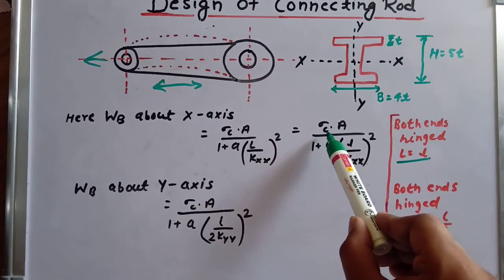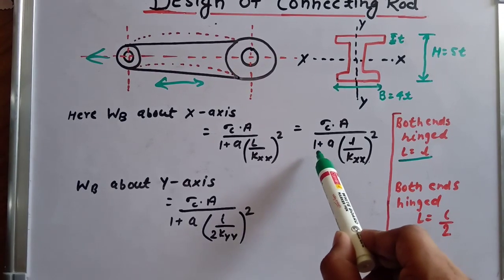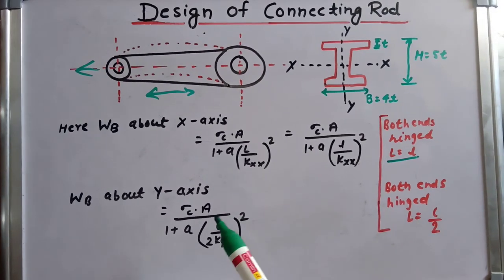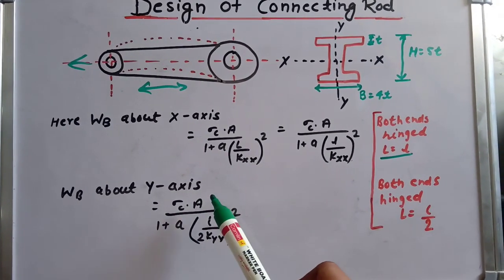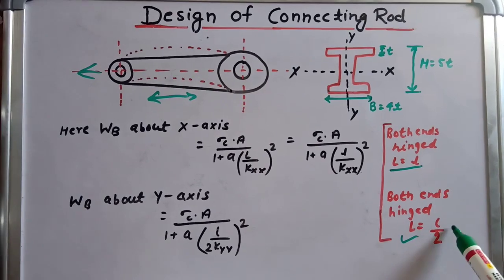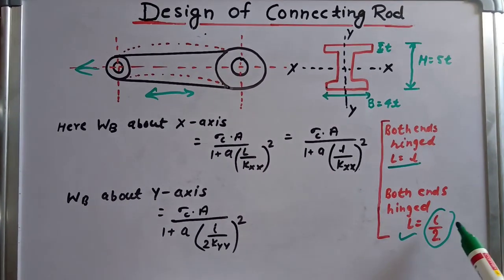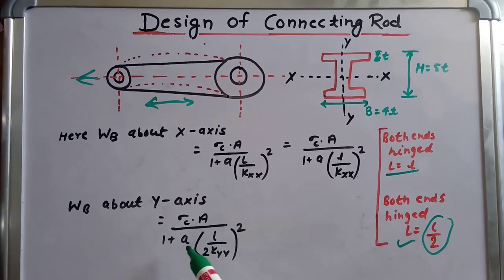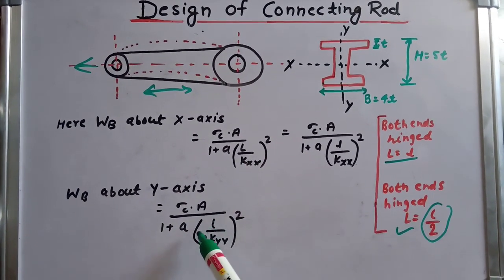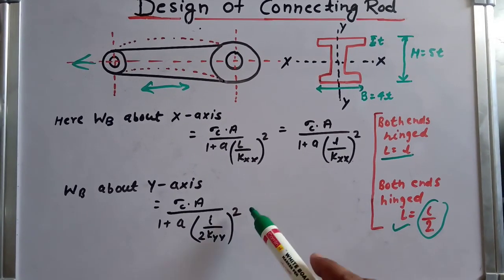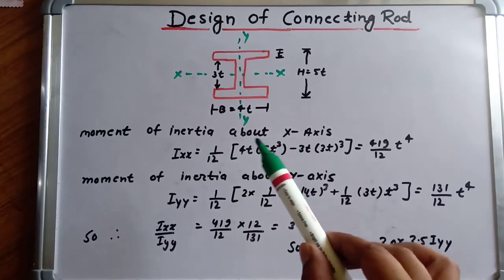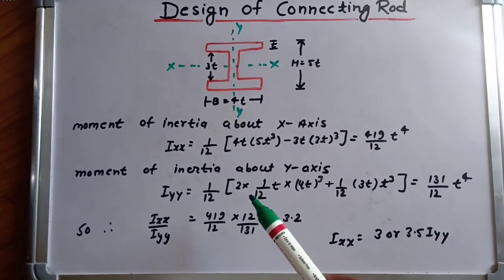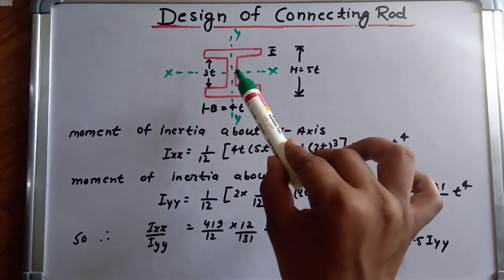For the buckling load about the y-axis, substituting L = l/2: Wb(y) = σc · A / (1 + a · (l/2ky)²). Now we will find the moment of inertia about the x-axis and the y-axis.